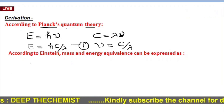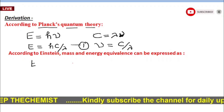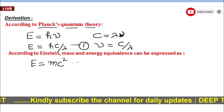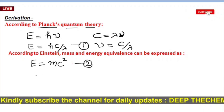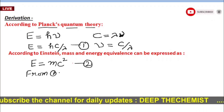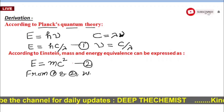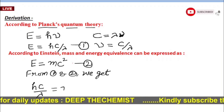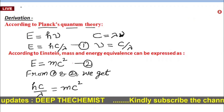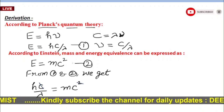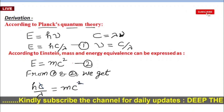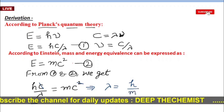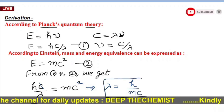According to Einstein's mass-energy equivalence, E is equal to mc². Let this be equation 2. From equations 1 and 2, we get hc upon lambda equals mc². Cancelling c from both sides and rearranging, we get lambda is equal to h upon mc. Let this be equation 3.